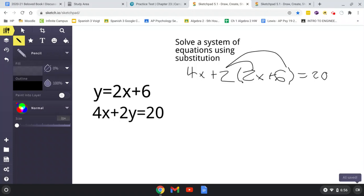And we can solve for x. So if you distribute, you're going to get 4x plus 4x plus 12 equals 20. Subtract 12, combine like terms, 8x equals 8.